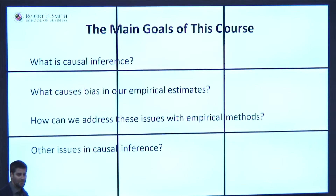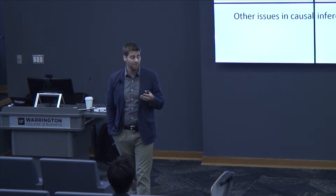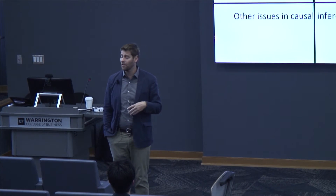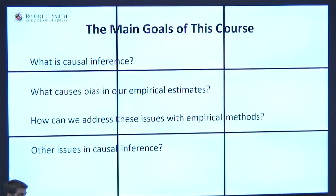The main themes of this course are asking the following questions: What is causal inference? What are we trying to do here? What is going to cause bias when we're trying to estimate the causal effect of X on Y? When are we going to get it right? When are we going to get it wrong? How can we address these potential biases? What are the most common methods we use, and when do they apply? The fourth bucket is a catch-all for best practices in empirical research, but most of the course covers the first three questions.